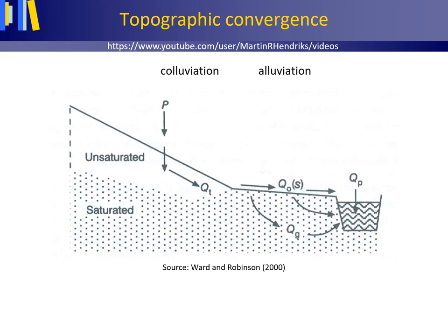Often, but not necessarily so, variable source areas are located near the channel network that drains the area. This has to do with processes such as colluviation — the deposition of sediment through the action of gravity at the foot of a slope, causing the hillslope angle to diminish in the direction of the stream — and alluviation — the deposition of sediment by streams, causing areas near the stream to be flat. These flat areas are called alluvial terraces, and their slope is logically parallel to the former stream's gradient.